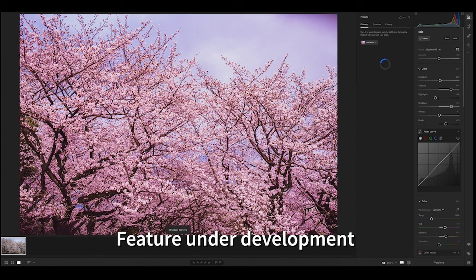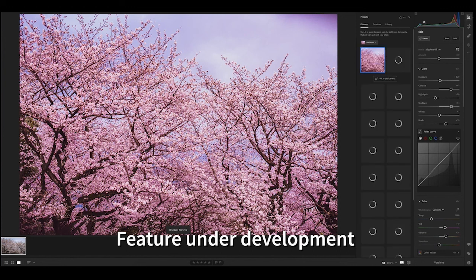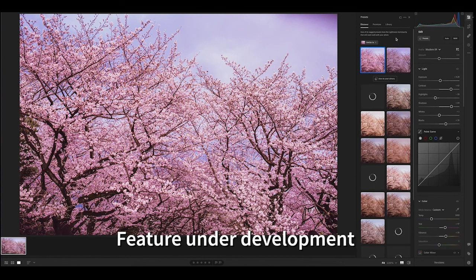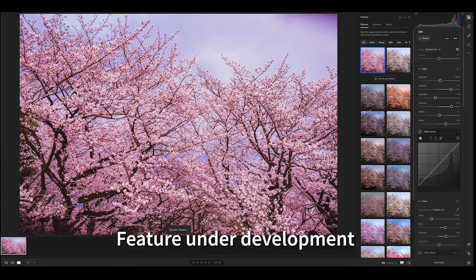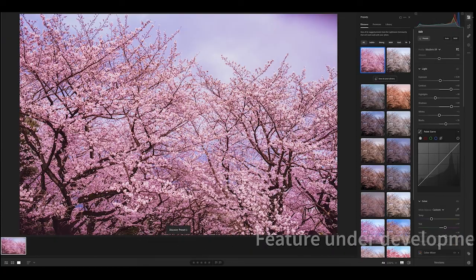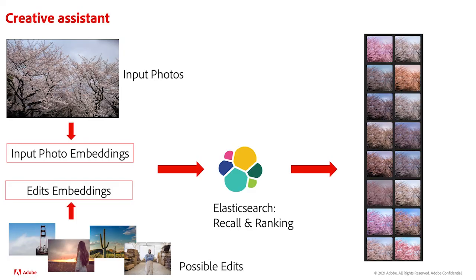The Adobe Sensei Creative Assistant helps users perform key workflows more efficiently. As you're using a product, our algorithms recognize and suggest ways to perform or complete your task with a single touch or click. Here's an example of a feature currently under development for Adobe Lightroom that displays a selection of image presets based on ones you've previously liked or shared, as well as the image content and tone. This feature enables you to easily find a preset you like and then customize it further to achieve the perfect result. It's made possible by embedding user context and image characteristics into the same embedding space, and using Elasticsearch to retrieve and rank the best presets.